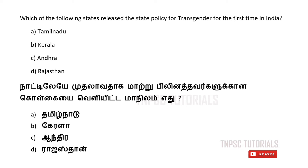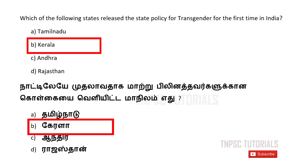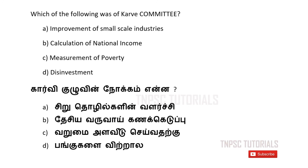released the state policy for transgenders for the first time in India? A) Tamil Nadu. B) Kerala. C) Andhra Pradesh. D) Rajasthan. The answer is B — Kerala. Seventh one: Which of the following was the function of the KARV Committee?